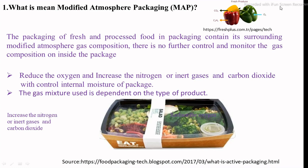In this modified atmosphere system, it was basically developed from controlled atmospheric storage and modified atmospheric storage, then converted into the controlled atmospheric packaging and modified atmospheric packaging system. In this system, the atmosphere surrounding the packed food during packaging is modified by reducing the oxygen level and increasing the carbon dioxide or inert gas, with controlled internal moisture content.